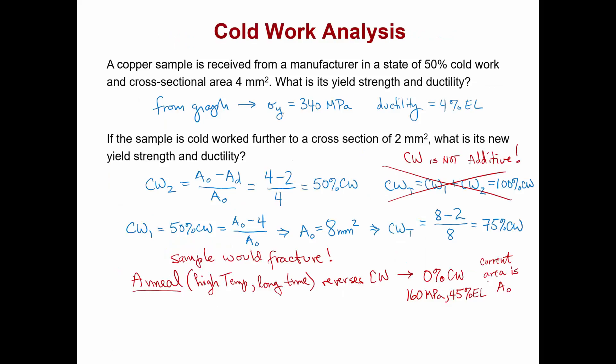Finally, if we're now interested in cold working our annealed sample from a cross section of 4 square millimeters down to 2 square millimeters, we recognize that this is 50 percent cold work. We've reduced the cross sectional area by 50 percent,